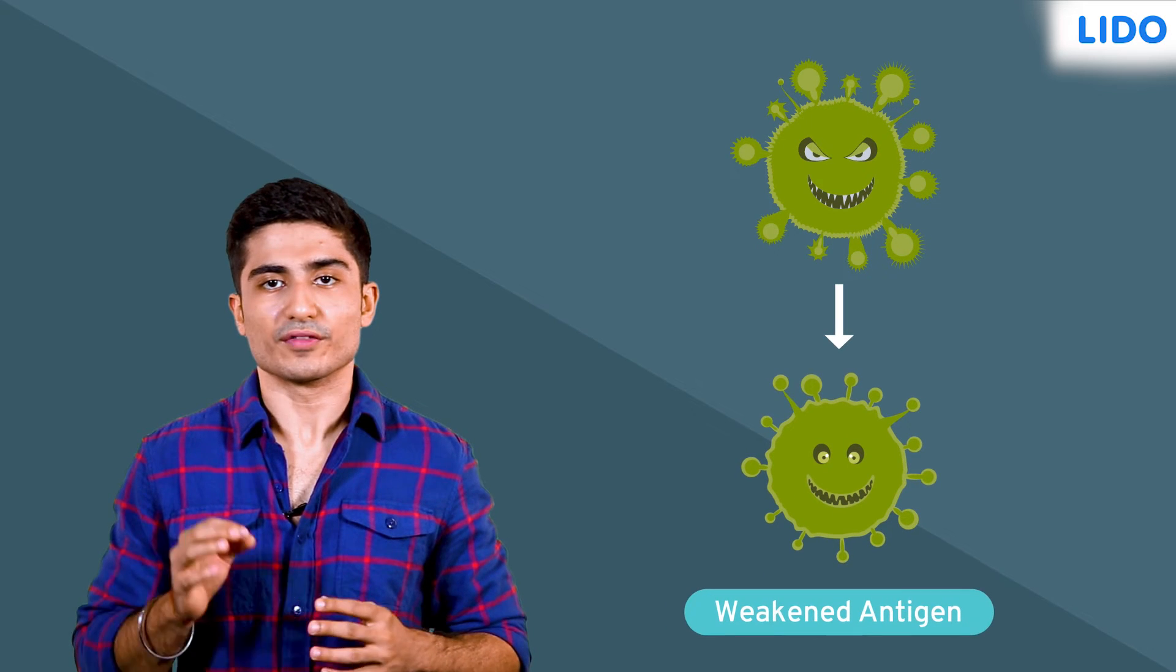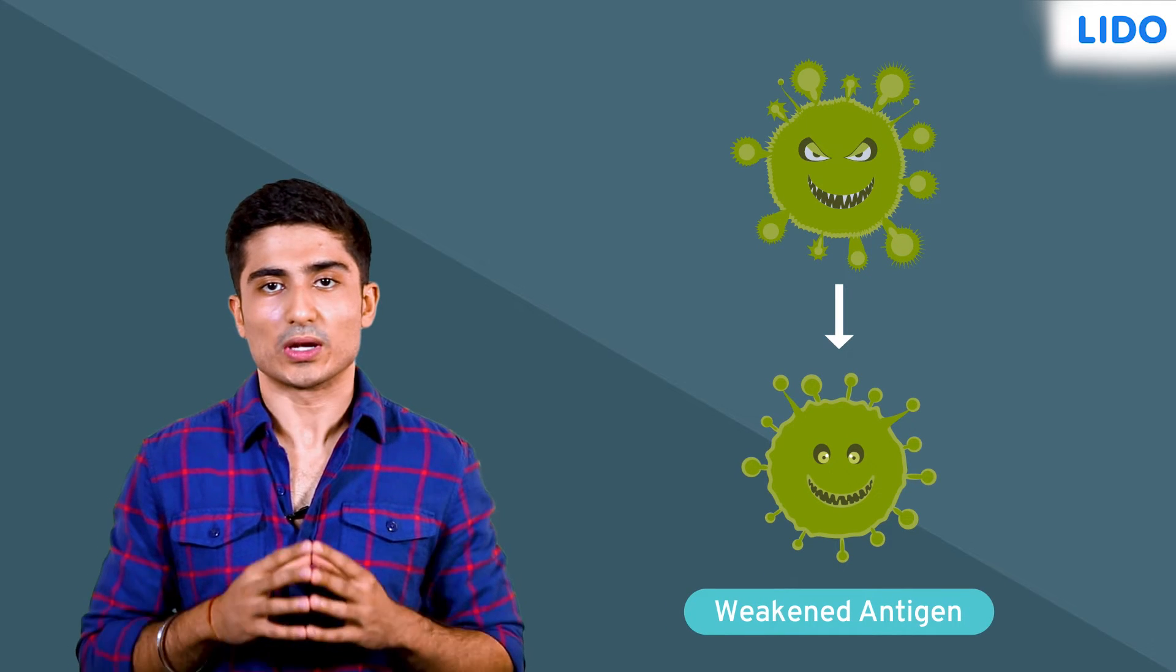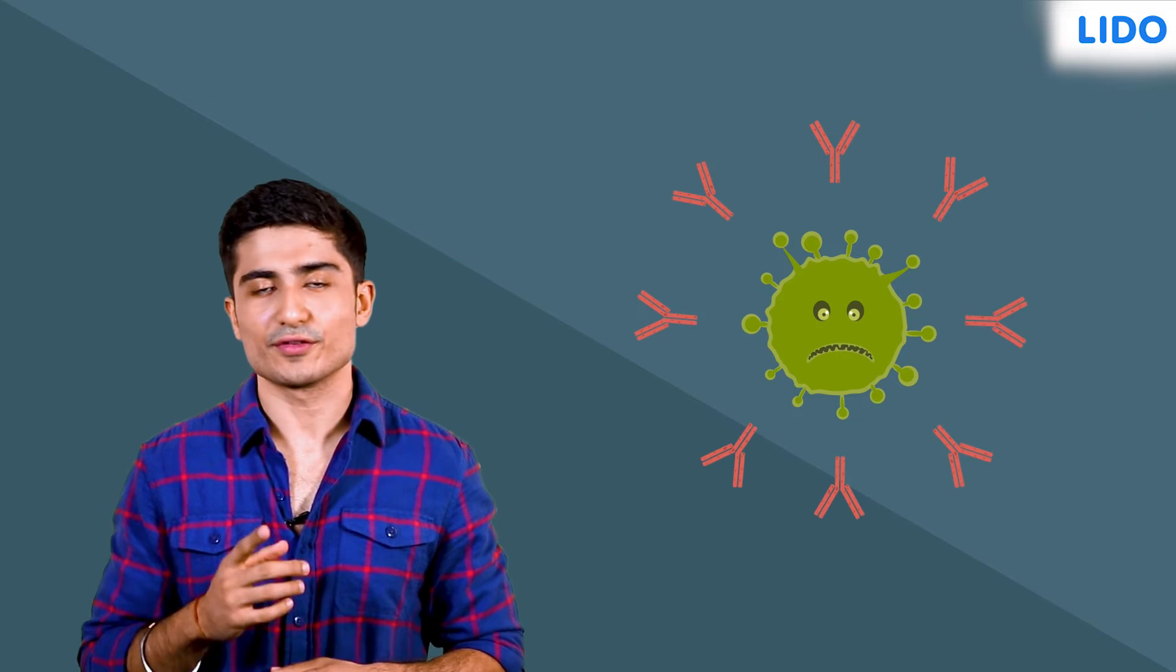Vaccines are made of killed germs or viruses of a disease. They may also use a weakened antigen or a very tiny quantity of the antigen that will not make you sick but will trigger the body to produce the antibody to fight it.